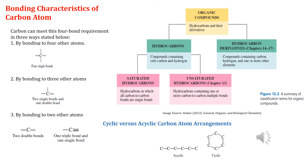Carbon can meet this four-bond requirement in three different ways. Number one, carbon can bond to four other atoms, and this situation requires the presence of four single bonds, as shown in the figure. Another is by bonding to three other atoms, which requires the presence of two single bonds and one double bond. The third way is that carbon can bond to two other atoms, and this situation requires the presence of either two double bonds or a triple bond and a single bond, as also shown in the figure.